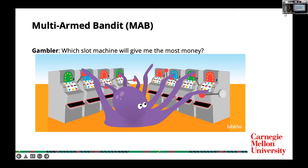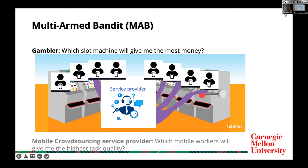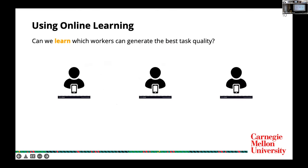Motivated by a gambler who wants to know which slot machine can generate the most money, we formulate this problem as a multi-armed bandit problem, or MAB for short. If we consider mobile workers as arms, then the service provider wants to know which mobile workers can generate the highest task quality. The answer is to use online learning. Suppose we have three workers: in the first round we choose worker 1 and observe a quality of 100; then worker 2 gives 30, and worker 3 gives 80. After multiple rounds, we can have a rough estimation about the qualities of these workers.